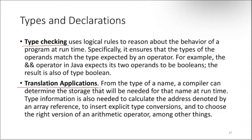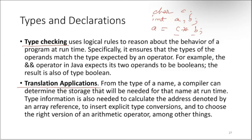Type checking is a very important thing, as you already know in Java or even in Python. If you try to multiply two variables which are not of the same type, it will give you a type error. Say you have char c and int a and b, and somebody tries to do a = c * b. You will get an error that c and b are not of the same type. This is not a runtime error — it is a compile time error.